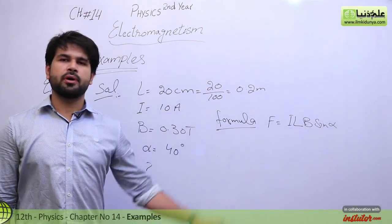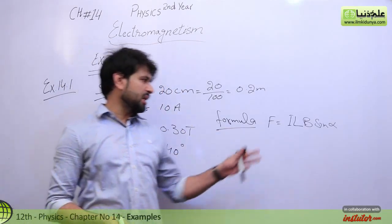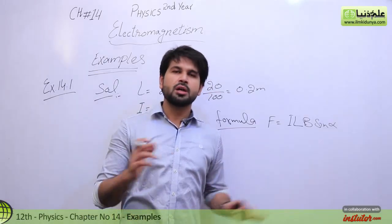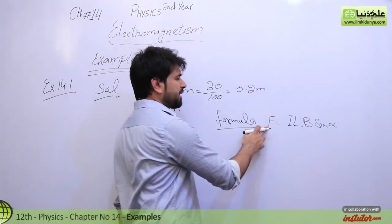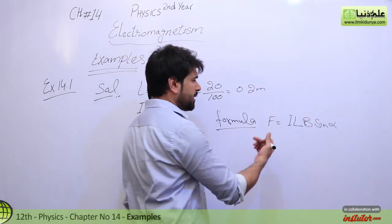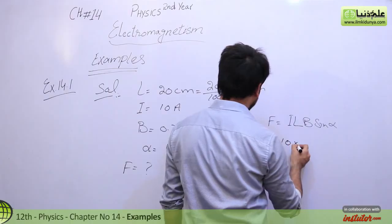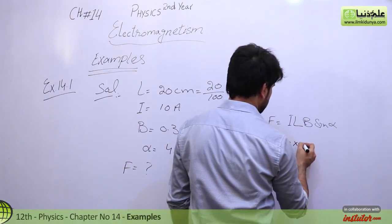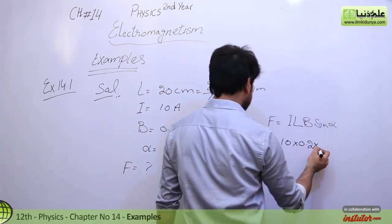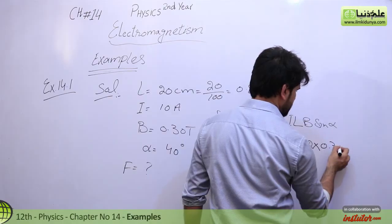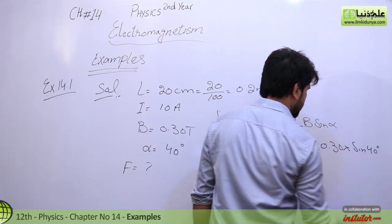This formula gives the magnetic force on a current-carrying conductor in a magnetic field. Putting the values: F equals 10 multiplied by 0.2 multiplied by B which is 0.30, multiplied by sin 40 degrees.